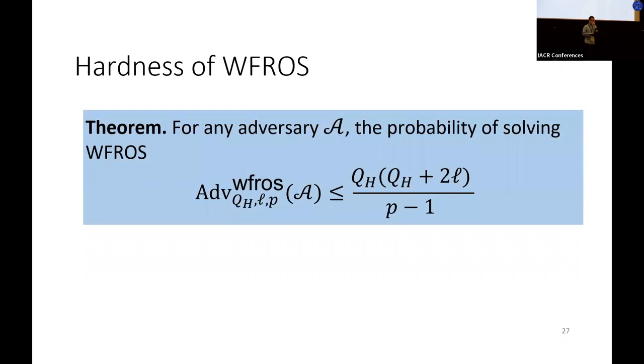For the hardness of WFROS, we can show that for any adversary, the probability of solving WFROS is bounded by Q_H times Q_H plus 2L over p minus 1. We note that p is the elliptic group order. Therefore, for an adversary to solve WFROS, either Q_H or L have to be roughly the scale of square root of p, which implies the exponential security of our scheme.